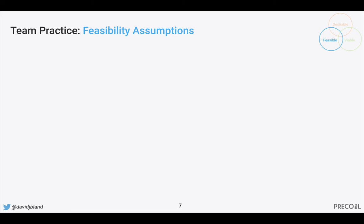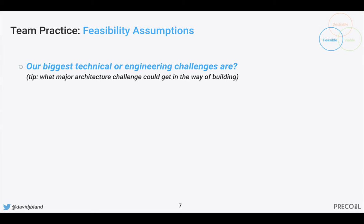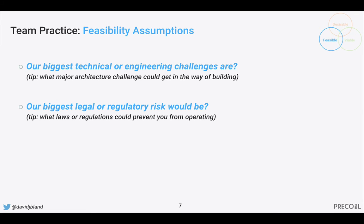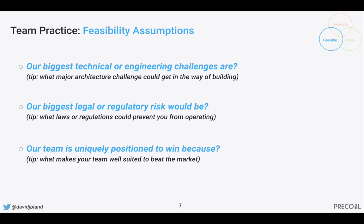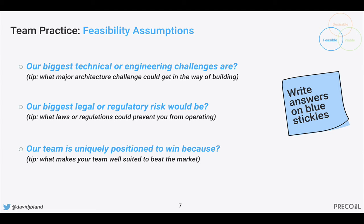Now let's talk about some of the feasibility assumptions you're making. Our biggest technical or engineering challenges are — what are the major architectural challenges that can get in your way of building? Our biggest legal or regulatory risk would be — what laws or regulations could prevent you from operating? Our team is uniquely positioned to win because — what makes your team well suited to beat the market? Write these answers on blue stickies.